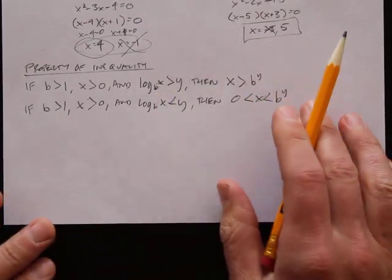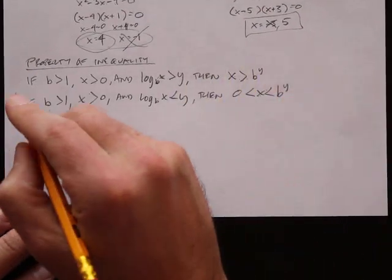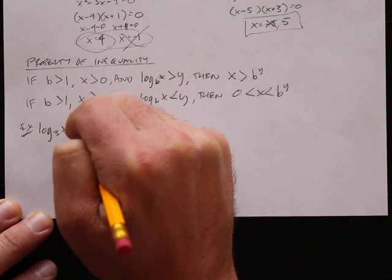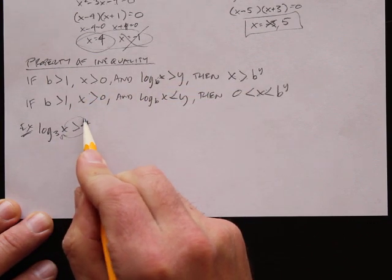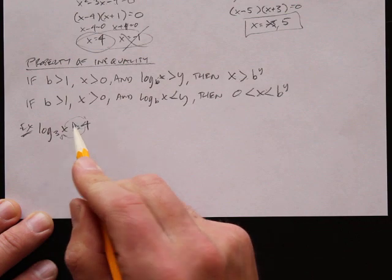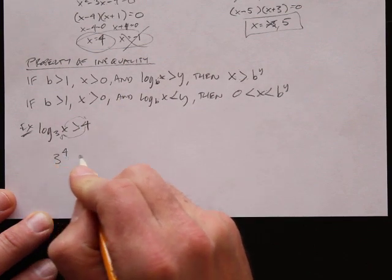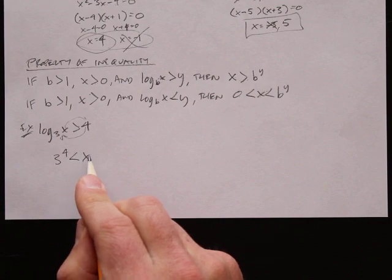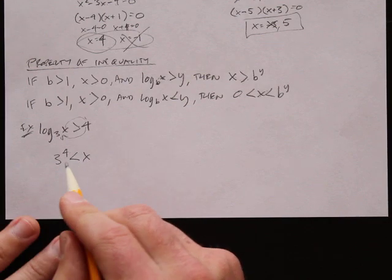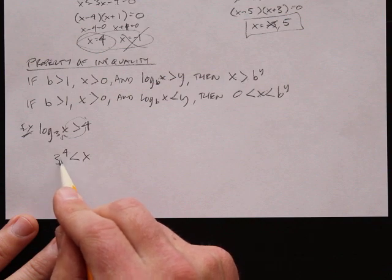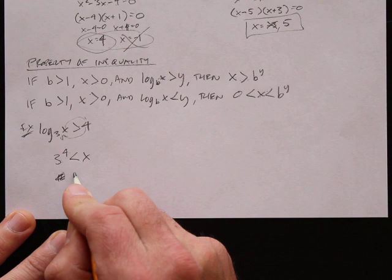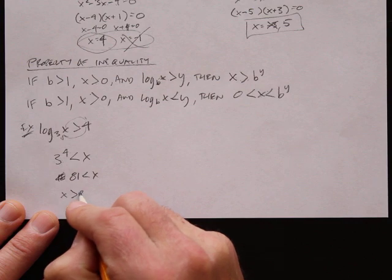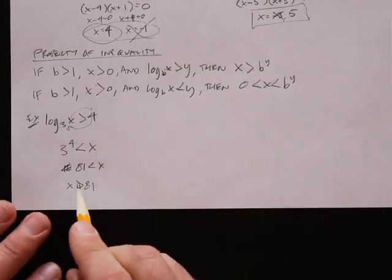Let's do some examples. Log base 3 of x is greater than 4. I take this 4 and jam it up here, x drops over, and the sign switches: 3 to the 4th power is less than x. 3 to the 4th is 3 times 3 times 3 times 3, which is 81. So 81 is less than x, or x is greater than 81.